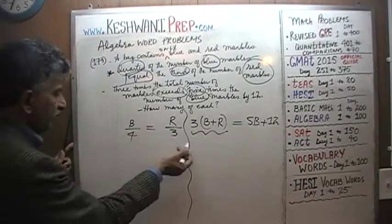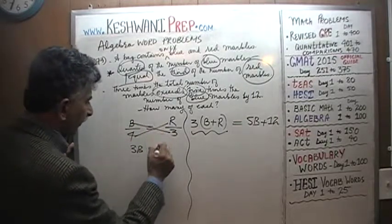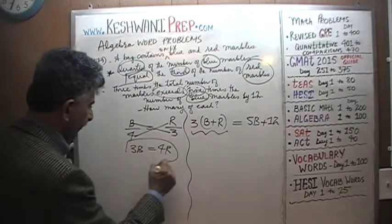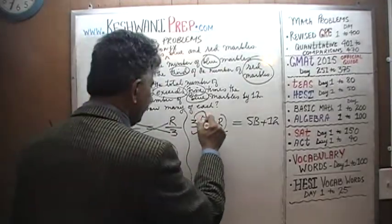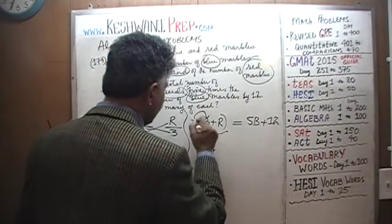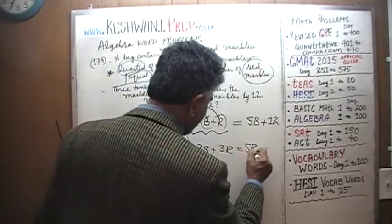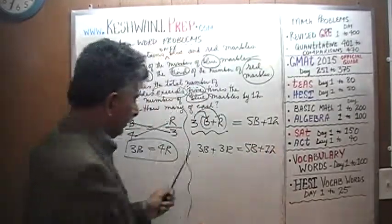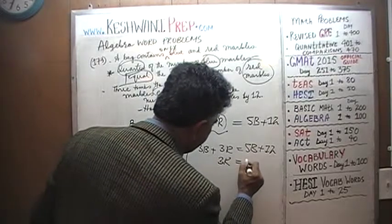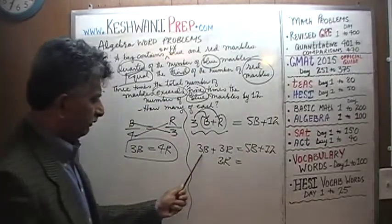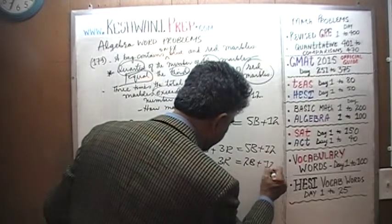Here's our first equation: B/4 = R/3. When we cross multiply, we get 3B = 4R. That's our first equation. For the second equation: 3(B + R) = 5B + 12, which expands to 3B + 3R = 5B + 12. Bringing the B terms to the right side gives us 3R = 2B + 12.